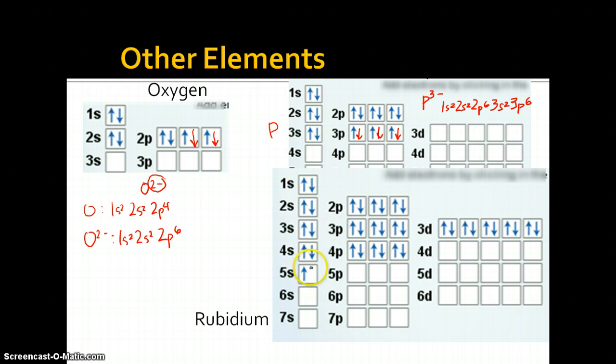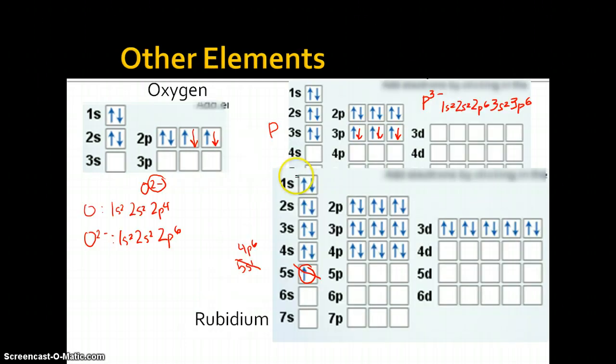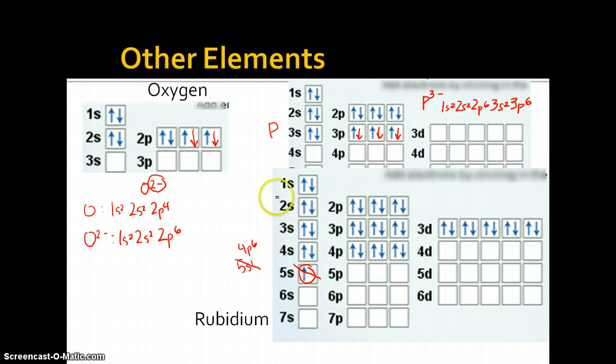Rubidium. Well, if rubidium loses this over here, it has the full shell right here. So rubidium normally has 5s1. But once it loses that, it's just simply going to stop at 4p6. So if we look at oxygen here, it has the same electron configuration as neon. Phosphorus would have the same electron configuration as argon. So they're always trying, the phosphorus ion and the oxygen ion, they're always trying to imitate the noble gases.